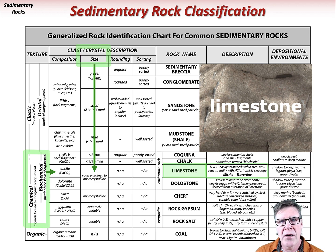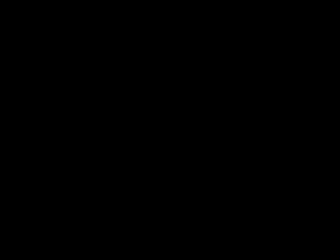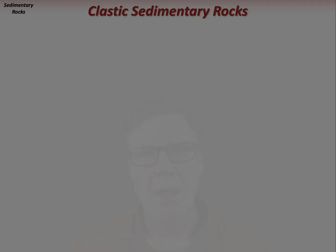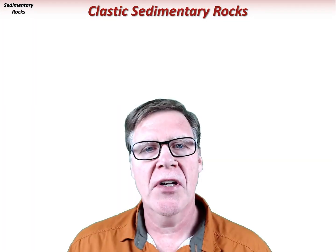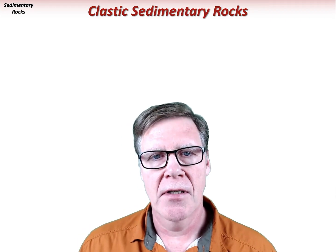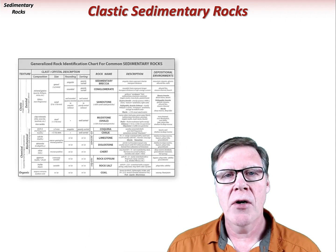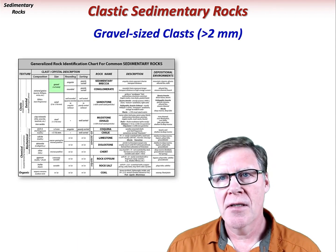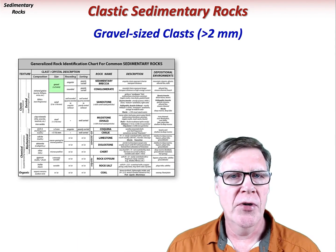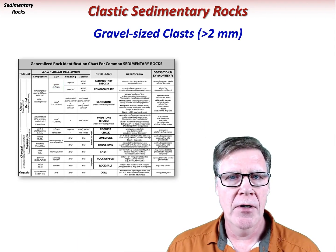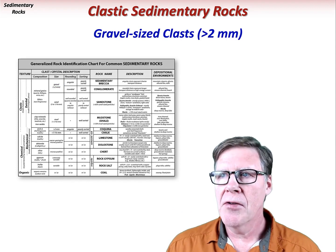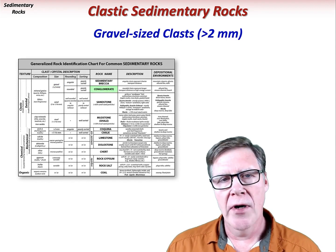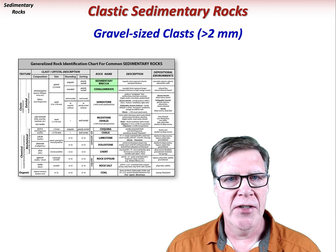Now let's look at the different types of sedimentary rocks, starting with the clastic rocks. A rock with gravel-sized clasts greater than 2 millimeters in diameter is either a conglomerate or a sedimentary breccia.